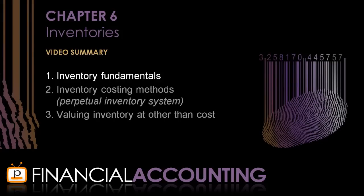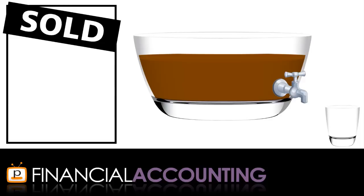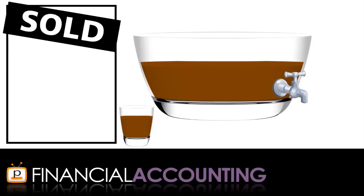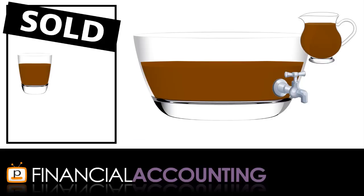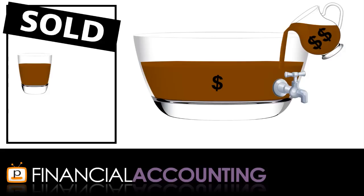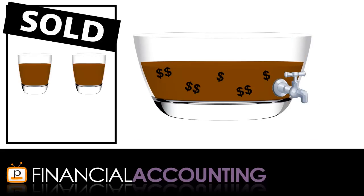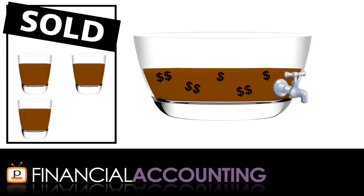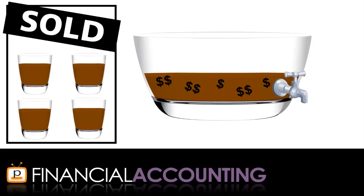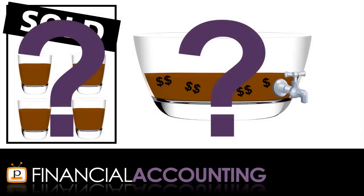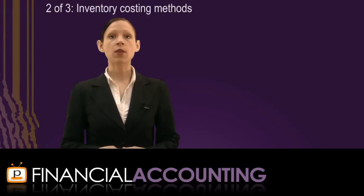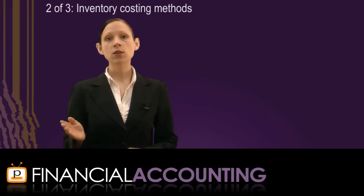Now that we've discussed some inventory fundamentals, let's move on to the focus of the chapter: using the inventory costing methods under the perpetual inventory system to determine the cost of goods sold and ending inventory. Consider the situation where a business buys liquid chocolate, repackages it and sells it to customers. During the accounting period, the business purchases more liquid chocolate at a higher price than the chocolate currently in their storage container. Both the lower and higher priced chocolate are mixed together and sold to customers. The dilemma is: of the chocolate sold and the chocolate remaining, how much was at the lowest price and how much was at the highest price? This is the dilemma we seek to solve by applying the inventory costing methods. There are four inventory costing methods that can be used to assign the cost of goods available for sale to cost of goods sold and ending inventory.